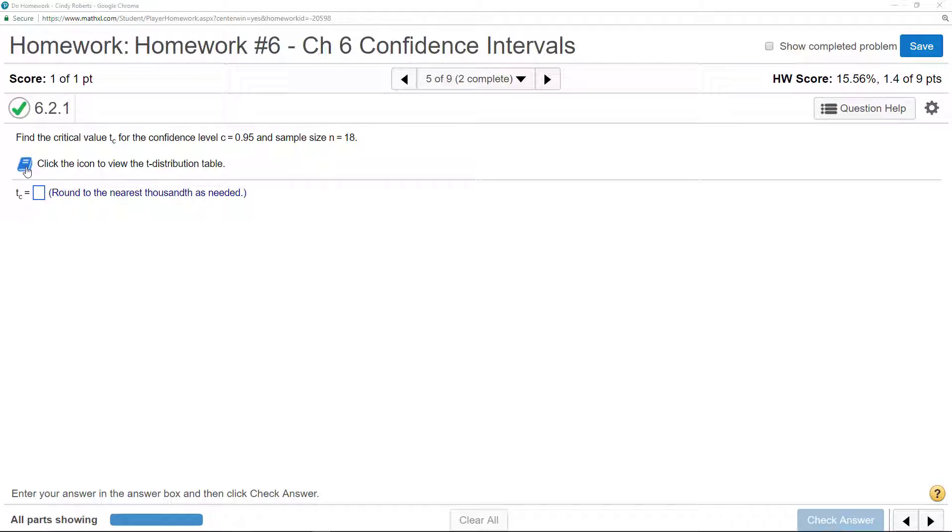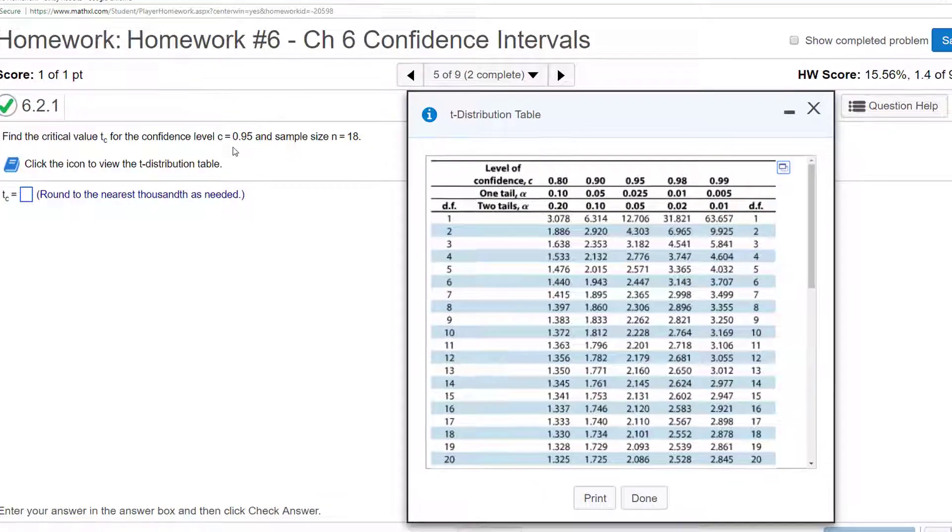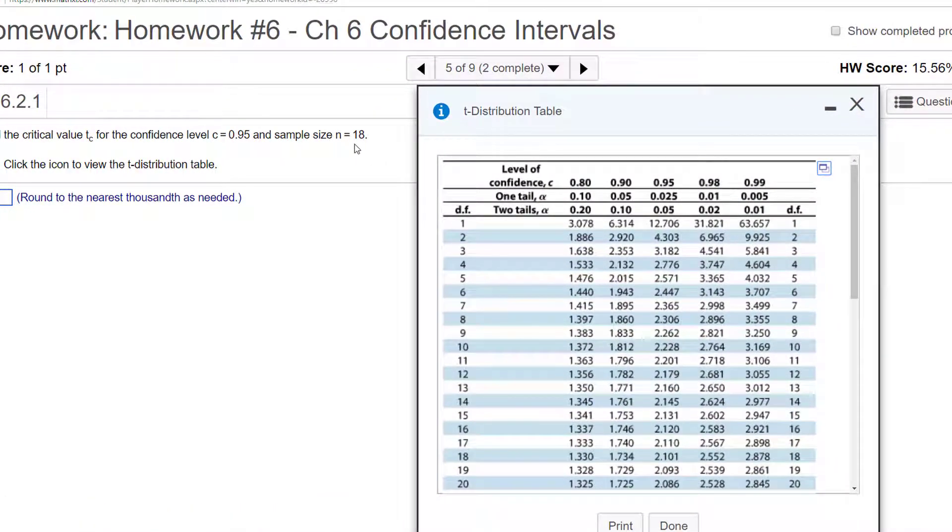So if I click on this icon, it says the confidence level is 0.95. I see that at the top. The sample size is 18. You have to be careful - this is the degrees of freedom, which is one less than the sample size, so it would be 17, and we would get 2.110.